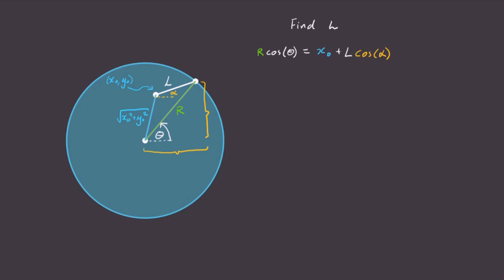Now the vertical distance is very similar. The total vertical distance is r sine theta, which is going to be equal to y0 plus l sine alpha.